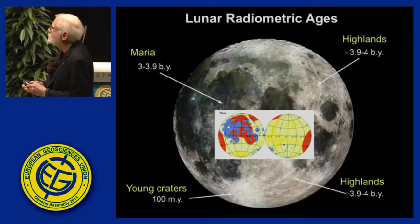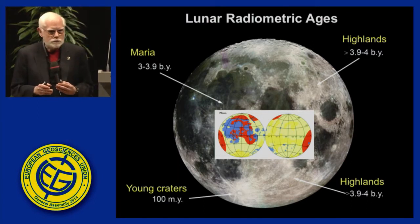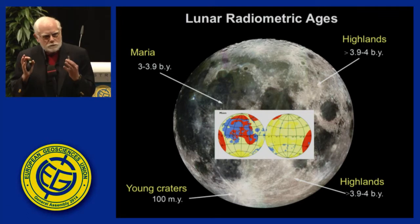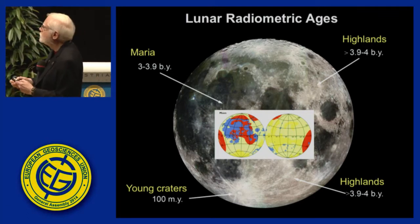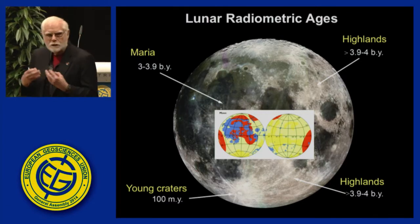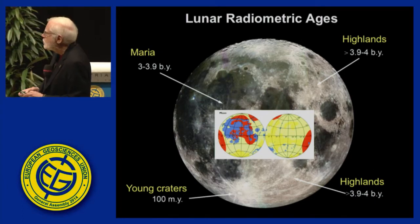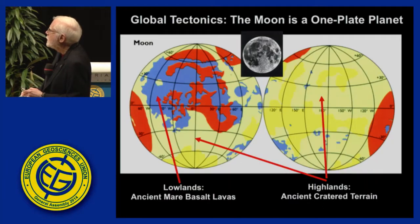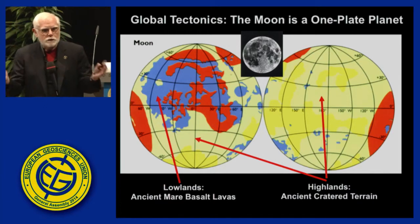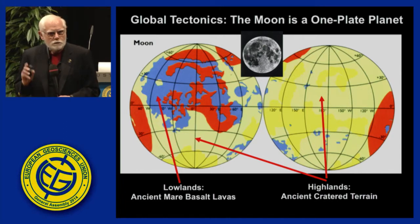The maria and highlands formed in the first few hundred million years of the history of the Moon. This is the record we've been looking for — it tells us what happened during the formative years of the history of the planets. Later, extrusive lava flows in the second few hundred million years resurfaced about 20% of the planet. When we look at the age distribution, geomorphic and geological features, we find no evidence for plate tectonics.